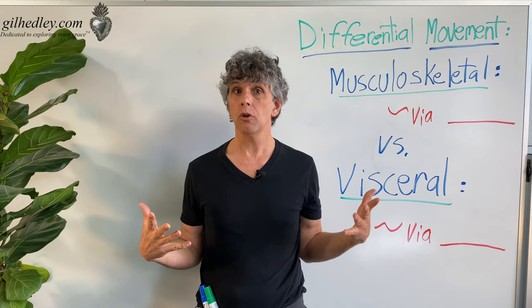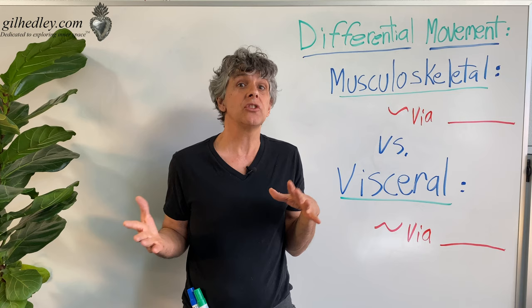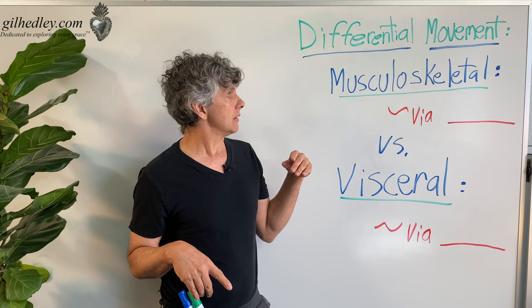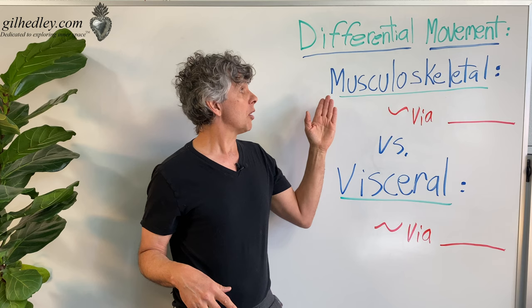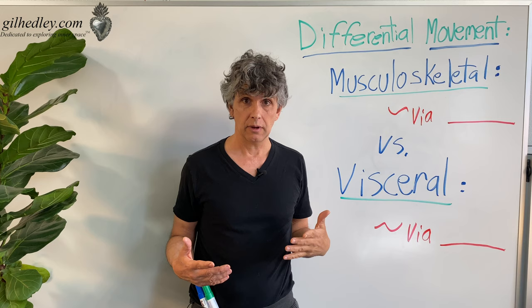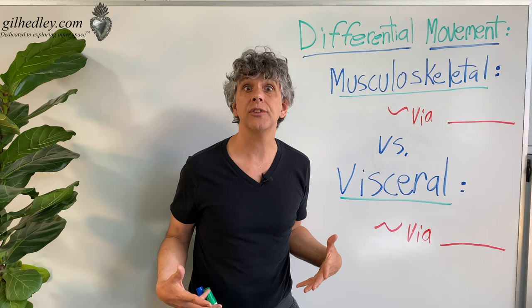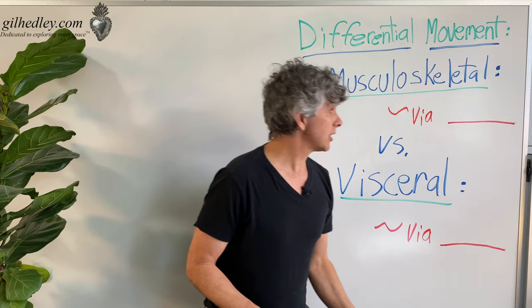The problem of differential movement is solved in more than one way in the human body, and those two different ways is what I'd like to talk about right now. Our musculoskeletal system expresses differential movement in a different way than our visceral system — our guts. Our guts move a little differently than our musculoskeletal system. The musculoskeletal system differential movement happens by fascia.